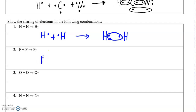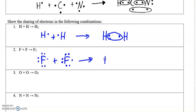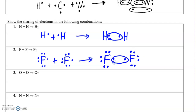Let's look at fluorine next. Based on its position in the periodic table, fluorine has seven valence electrons because it's in group 17. When those bond, they will also single bond with one another to form an octet. There's that fluorine with its seven, there's that fluorine with its seven, and there's the single bond.